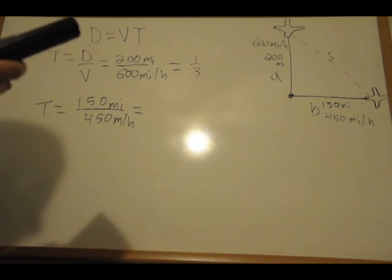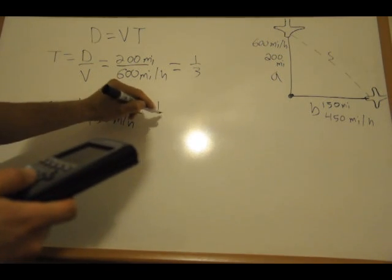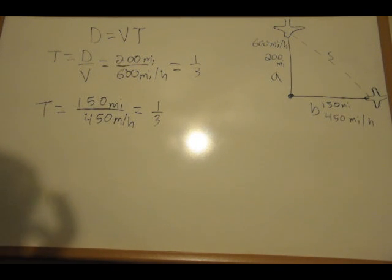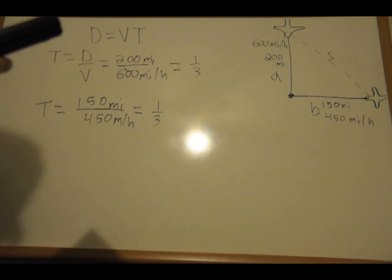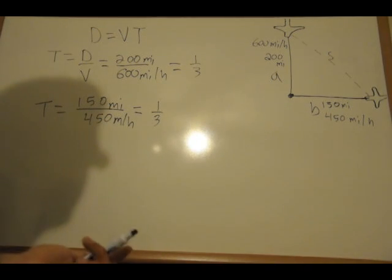Okay, so we'll compute these really quick. 200 divided by 600, that gives us one-third. And now 150 divided by 450, that gives us one-third. So they're both going to take a third of an hour to get there to get to that point.